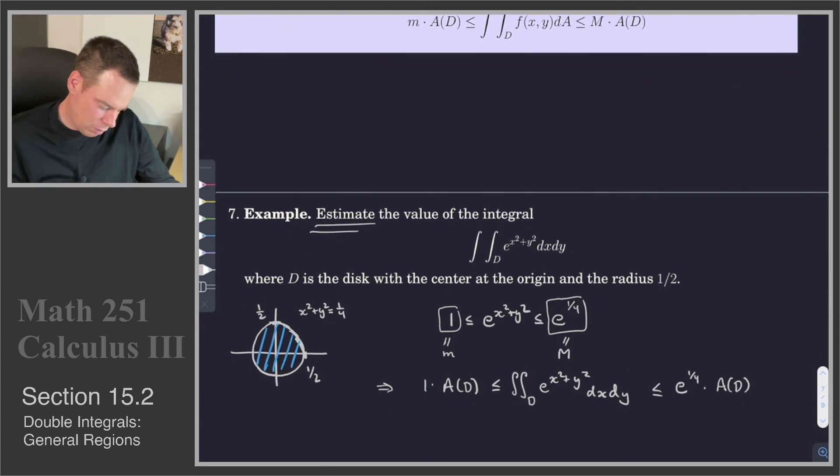What is the area of our region D? Well, the area of D, if I call this D, then the area of D is the area of the circle of radius 1 half, so it's pi times 1 half squared, or in other words, pi by 4.